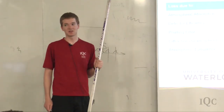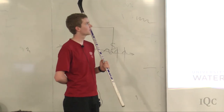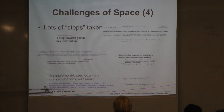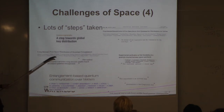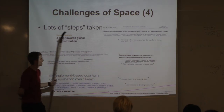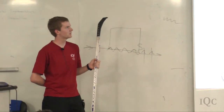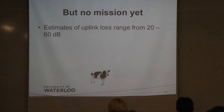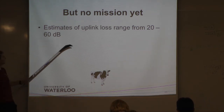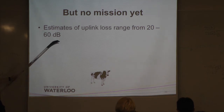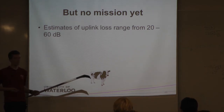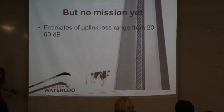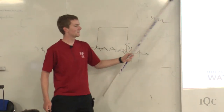There's lots of work still to be done. Every paper claims to be an important step towards satellites, but there's no mission yet. The uncertainty is significant: estimates of uplink photon loss range from 20 to 60 dB - that's orders of magnitude, like estimating the height of the CN Tower as somewhere between a meter and 10 kilometers. It's a pretty poor and tricky estimate.